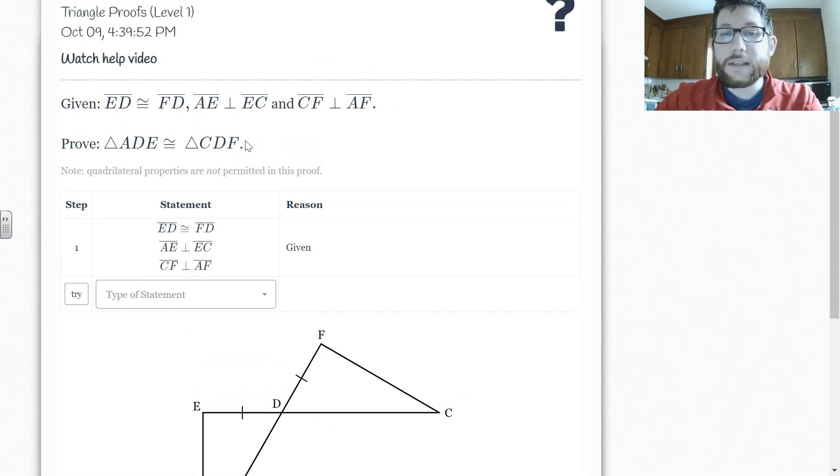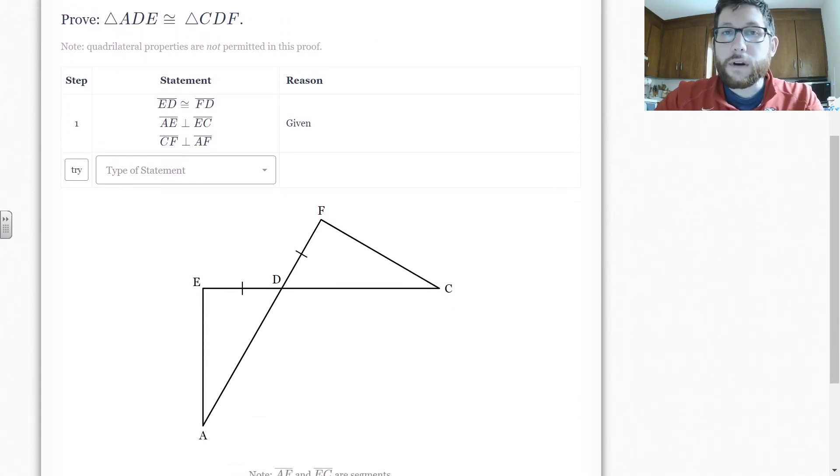And this is going to be a mix of CPCTC and congruent triangles. So just be on the lookout. Don't assume that it's one or the other. So there is one thing I want to warn you about. So actually, it's actually kind of nice. You can actually highlight these so you can see exactly what they're talking about.